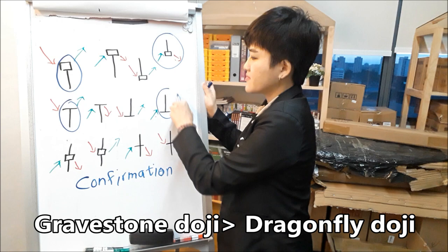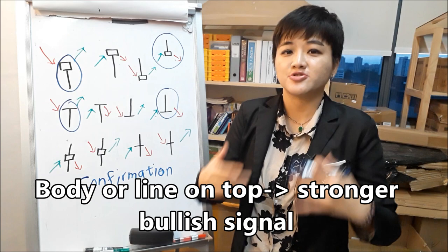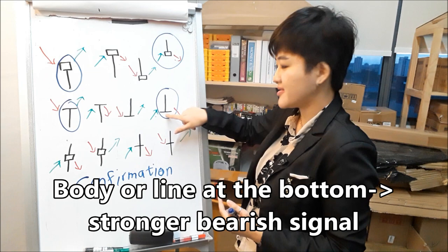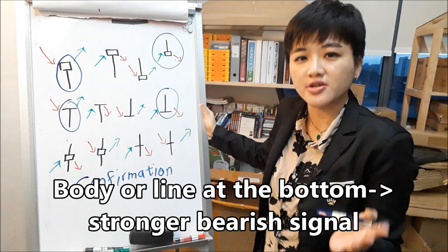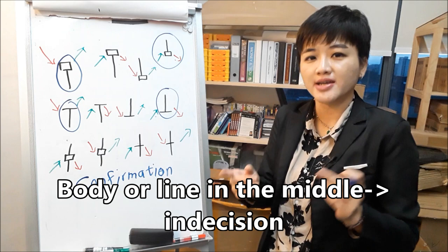To put things in simple terms: if the body or the open-close is on top of the candle, then it is a stronger bullish signal. If the body or the line is at the bottom of the candle, then that will be a stronger bearish signal. If the body or the line is in the middle, people are confused and don't know what they want until a confirmation candle shows up.